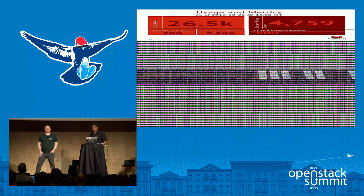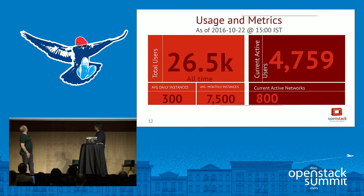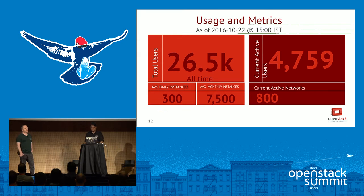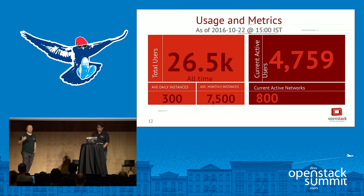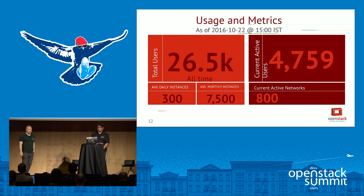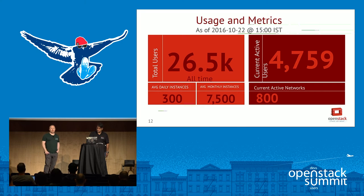Let's look at the metrics. 26,500 is the number of people who have created an account on TriStack and used the service since 2011. The current active users on the current release sits around 4,800 to 5,500. Every six months we upgrade to the newest release of OpenStack and reset the environment completely, so those user statistics are reset and counted again. We also see about 300 instances a day, 7,500 a month, and around 800 to 1,000 active Neutron networks — quite a bit of demand for a rather small amount of hardware.